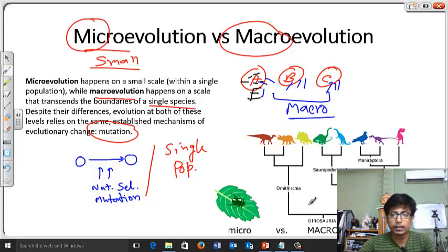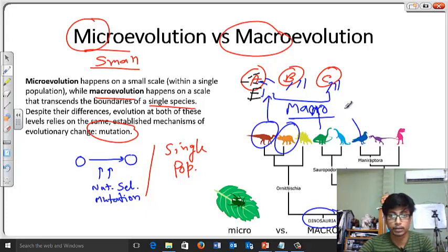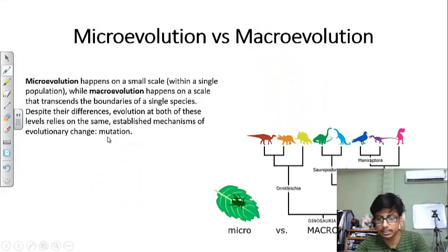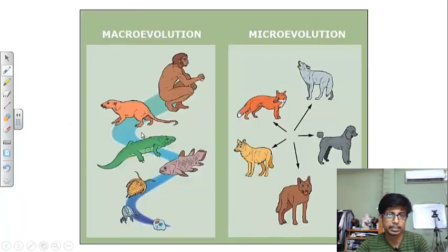For example, the macroevolution, see from a dinosaur different varieties of dinosaurs are originated and they have different species, so they belong to different populations obviously. That's in a sense is the micro and macro evolution, so now let's see the actual difference here in this aspect.